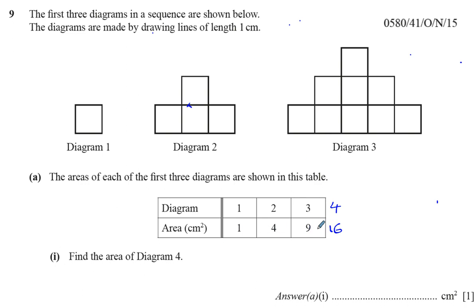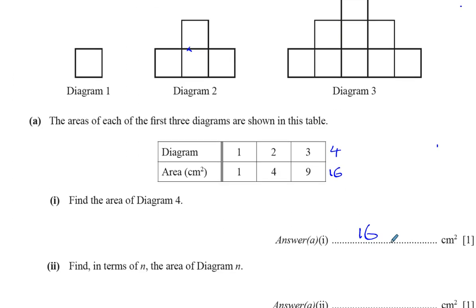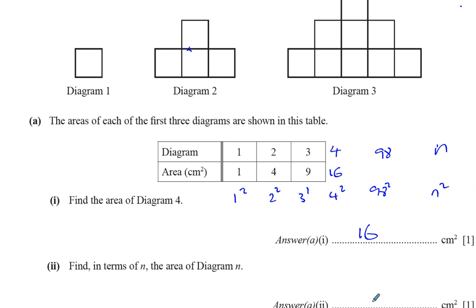So: one, four, nine, then sixteen. One squared is one, two squared is four, three squared is nine, four squared is sixteen. So in any case, that's going to be sixteen. Now it says find, in terms of n, the area of diagram n. Diagram n means the nth term, and we just worked out that the first term is one squared, the second term is two squared, the third is three squared, the fourth is four squared. So the nth term is going to be n squared. Very simple start to this question.